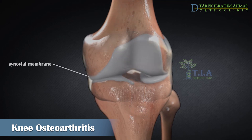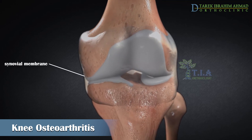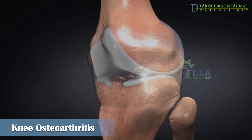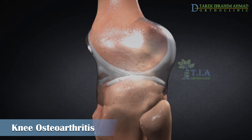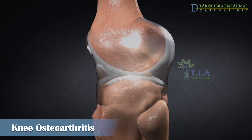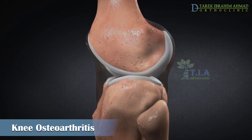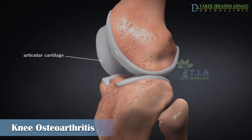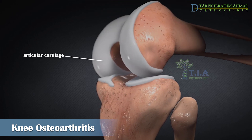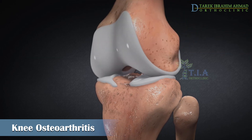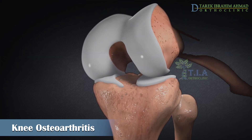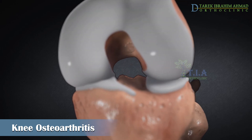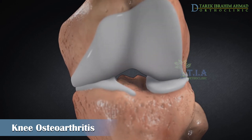The knee joint is surrounded by a thin lining called the synovial membrane. This membrane releases a fluid that lubricates the cartilage and reduces friction. The ends of the three bones that form the knee joint are covered with articular cartilage, a smooth slippery substance that protects and cushions the bones as you bend and straighten your knee.